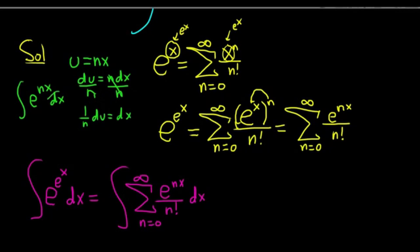Replacing dx with 1 over n du, we get 1 over n e to the u du. When you integrate e to the u, you get e to the u. So this is 1 over n e to the u plus c. It's 1 over n, and then u is nx. Basically, all we're doing is dividing by n when we integrate this.